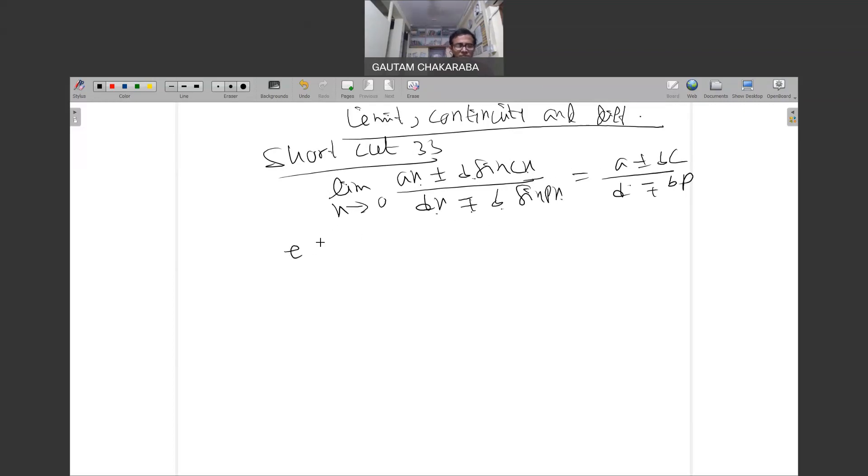Just an example: limit x tends to zero, 3x minus 7 sine 5x by 4x plus 3 sine 2x is equal to 3 minus 7 into 5 over 4 plus 3 into 2. So 3 minus 35 over 4 plus 6, minus 32 by 10, that is minus 16 by 5. Understood?